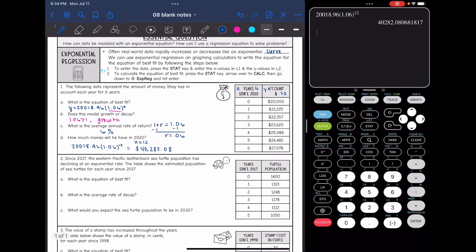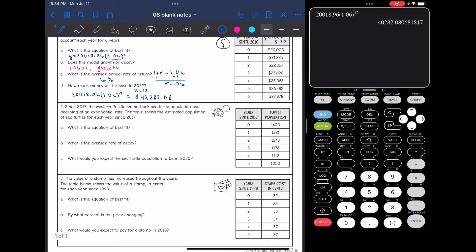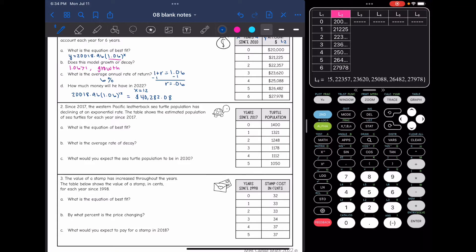Okay, let's look at number two. Since 2017, the Western Pacific Leatherback sea turtle population has been declining at an exponential rate. The table shows the estimated population of sea turtles each year since 2017. And the first question is asking us for the equation of best fit. So I'm going to go to the stat plot by clicking stat and then enter. And then I need to clear out the L1 and L2 values. Make sure you do not hit the delete while you are on L1 or L2 because that will delete the entire rows. You just want to delete the values.